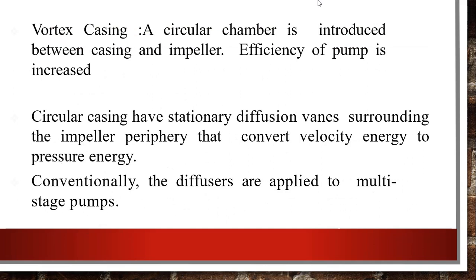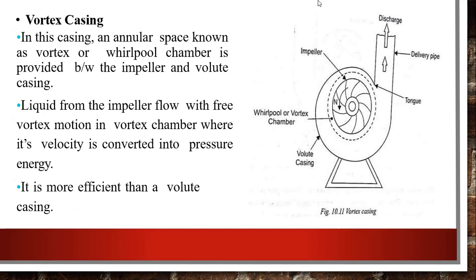In vortex casing, a circular chamber is introduced between the casing and the impeller, which increases the efficiency of the pump. The circular casing has stationary diffusion bends surrounding the impeller periphery that convert velocity energy into pressure energy. Conventionally, diffusers are applied to multistage pumps. As you can see in this picture, the vortex casing is placed between the impeller and the volute casing.